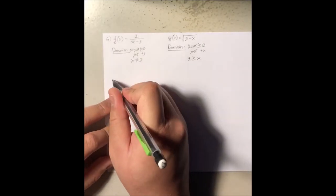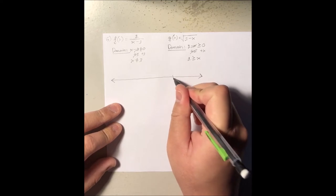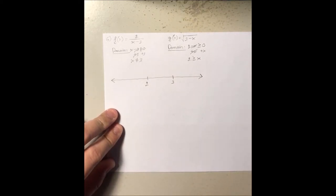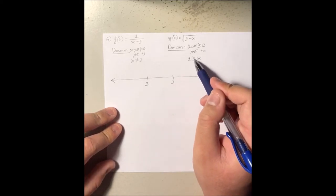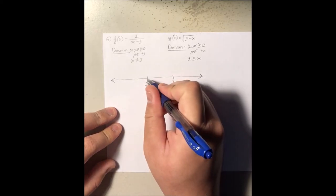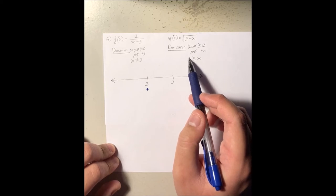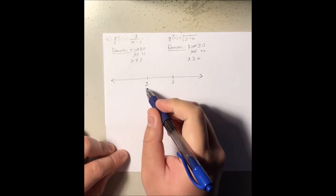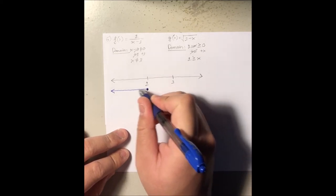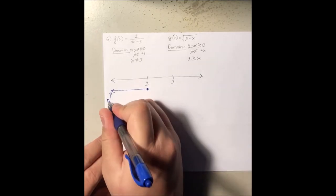On a number line, we have positive 3 here and positive 2 here. For the function g, x has to be less than or equal to 2, so we use a closed dot at positive 2. Since x must be less than or equal to 2, we go all the way to negative infinity. So this is the domain of function g.